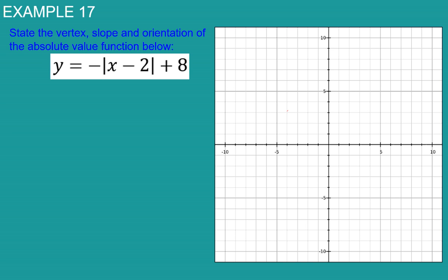All right, now we're going to state the vertex, slope, and orientation of this function right here. So we're always going to start by comparing it to A times the absolute value of X minus H plus K.